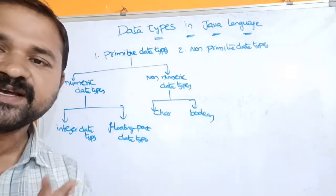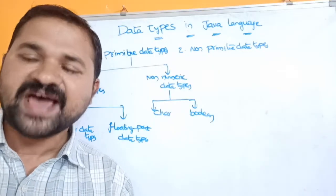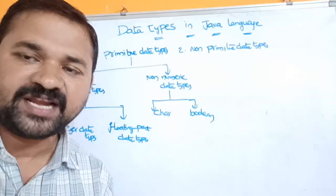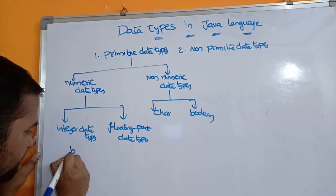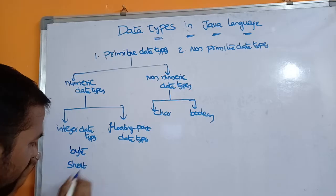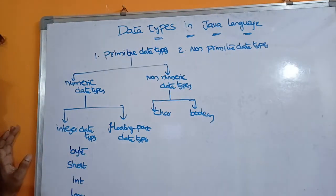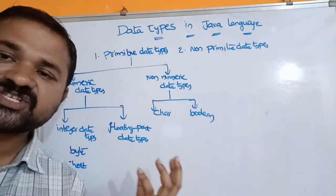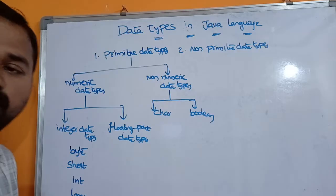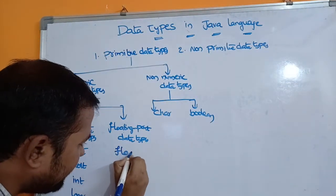Now let's see about integer data types. By using integer data types, we can declare integer variables which can store integer values. There are four integer data types available: the first one is byte, the second one is short, the third one is int, and the fourth one is long. By using these four we can store integer values.